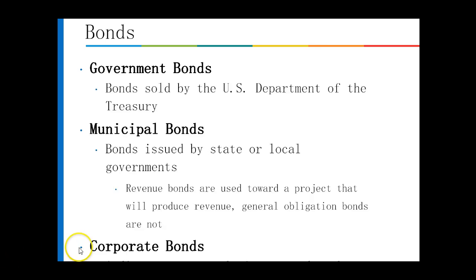Bonds come in several forms. Government bonds come from the U.S. Treasury Department. Municipal bonds are local and state. And corporate bonds. Depending on your state, municipal bonds — or munis — can be tax-free, meaning any interest you earn on those munis is not subject to taxation. Government bonds are the same way, but not all munis are tax-free. Know your state's rules regarding municipal bonds and the interest on them.